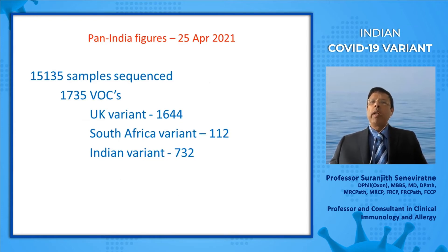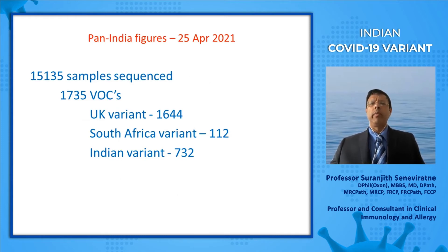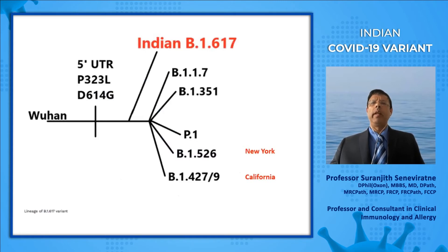If we look at the figures from India on the 25th of April, from 15,135 samples sequenced, there were 1,735 variants of concern. The UK variant was prominent, the South African variant was seen, the Indian variant was present, and the Brazilian variant was also found. Now, what is this Indian variant? That is what I'll try to explain in the next few slides.